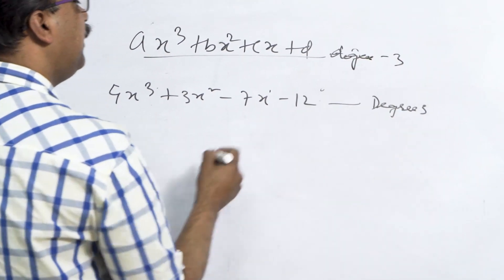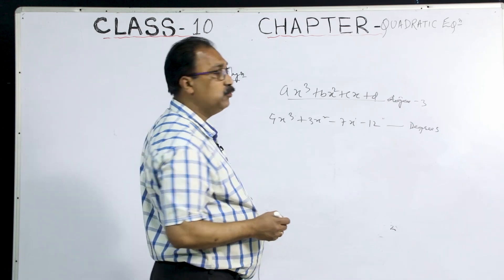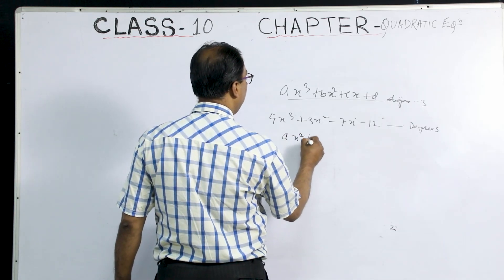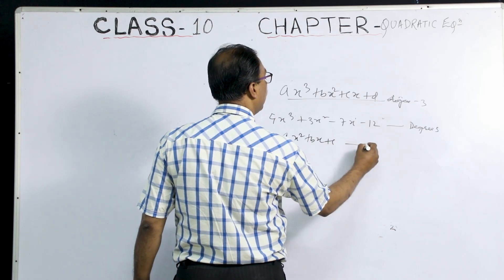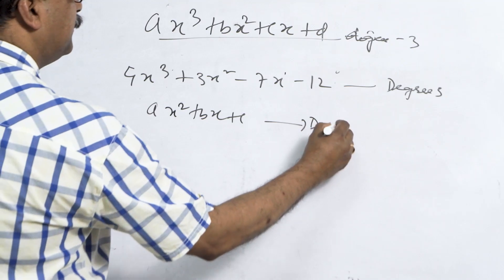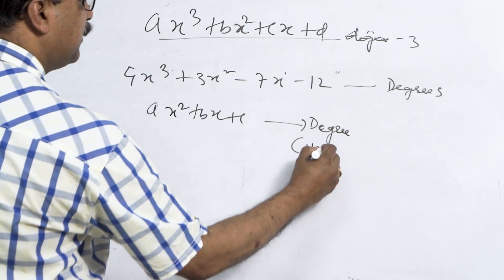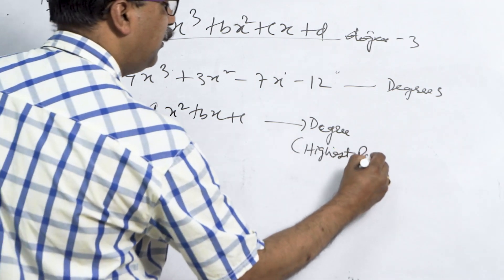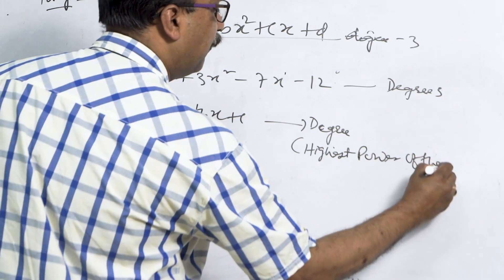Degree 3 is not a quadratic equation. It has to be degree 2. But here, Ax² + Bx + C — this polynomial has degree 2. Degree means the highest power of the variable.